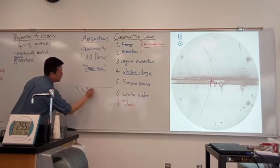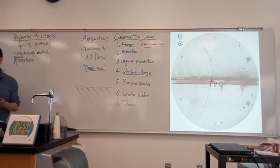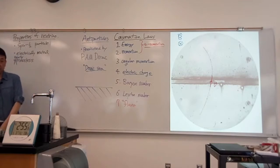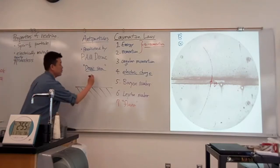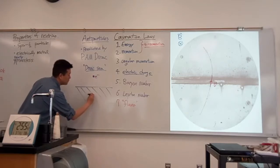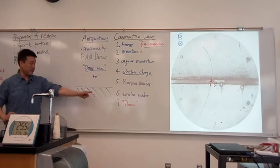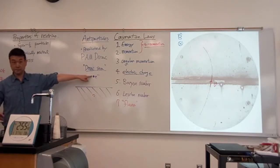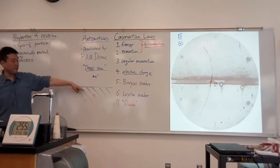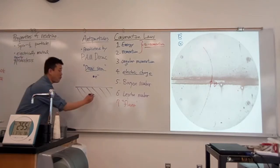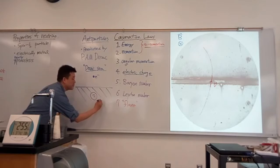What you contemplate is excitation of one of those negative energy states into positive energy. When you excite one of these filled up states into a positive energy state, you would have a real electron that we are already familiar with.